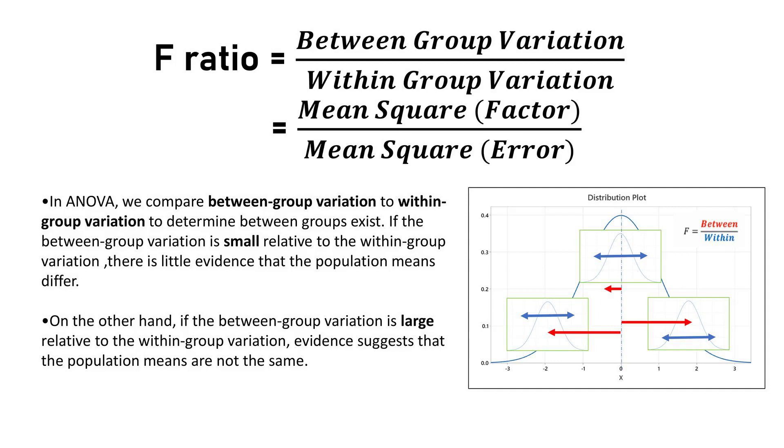On the other hand, if the between-group variation is large relative to the within-group variation, evidence suggests that the population means are not the same.